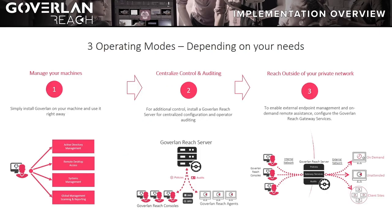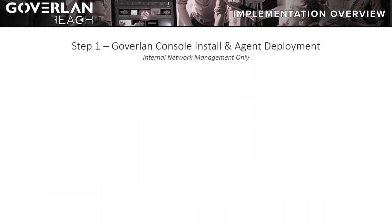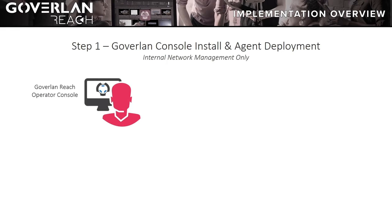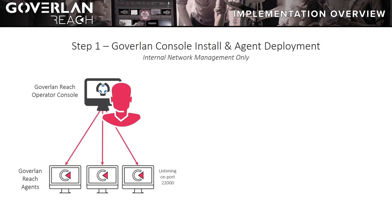Here is an overview of the three possible layers of implementation depending on the features you'd like to take advantage of. The first layer, for internal network management only, consists of simply installing the Goverland Console on your daily-use operating system. Windows Server 2008 or later is also supported. The Goverland Agent Service will then be listening on the default port of 22000, which the Goverland Console communicates directly to.